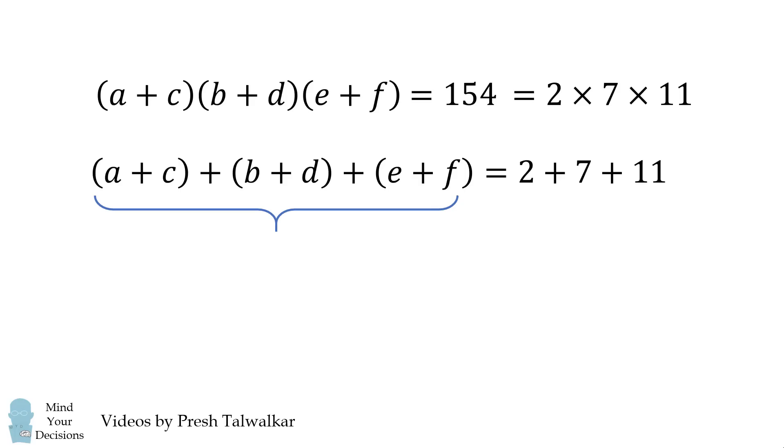Now, if we look at these bracketed terms, we have one of each letter. Therefore, we have the sum of the faces. And this is equal to 20. And that's the answer.